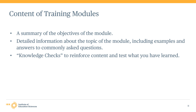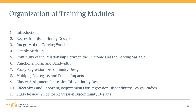The content for this training series on the WWC RDD standards is divided into several modules that follow a consistent structure. Each module includes a summary of the objective for the module, detailed information on the module topic including examples, and knowledge checks to reinforce content and test what you have learned. The WWC RDD Standards training series contains 11 separate modules. The first and current module provides a general introduction to the training series and reviewer certification options.